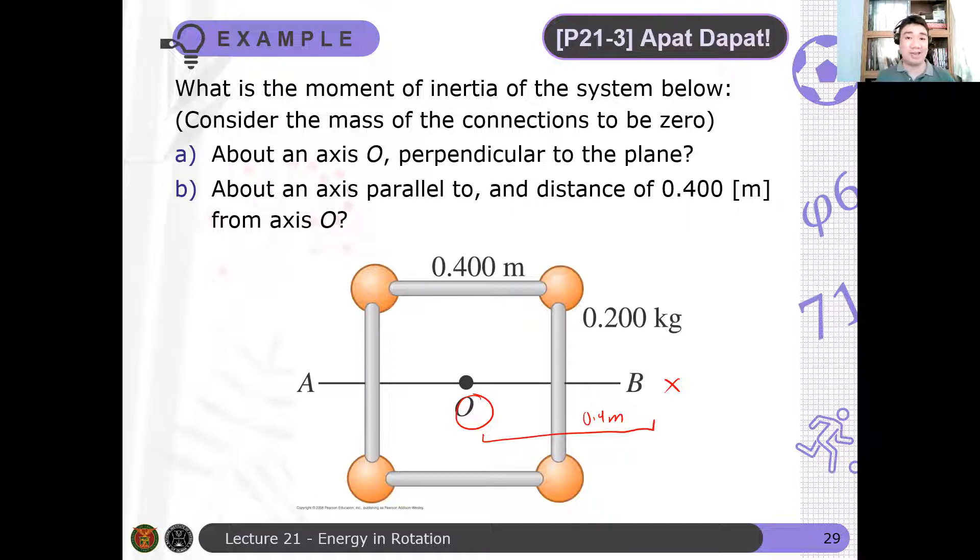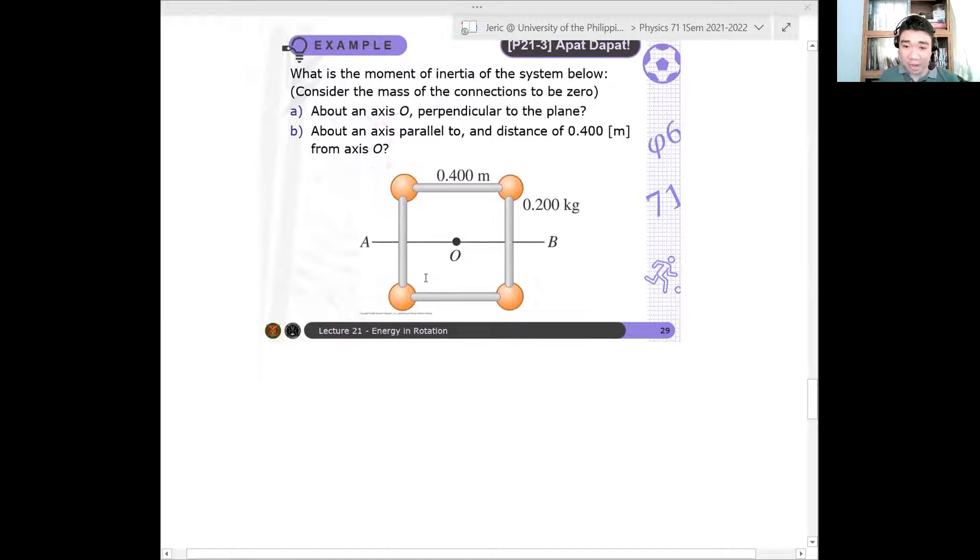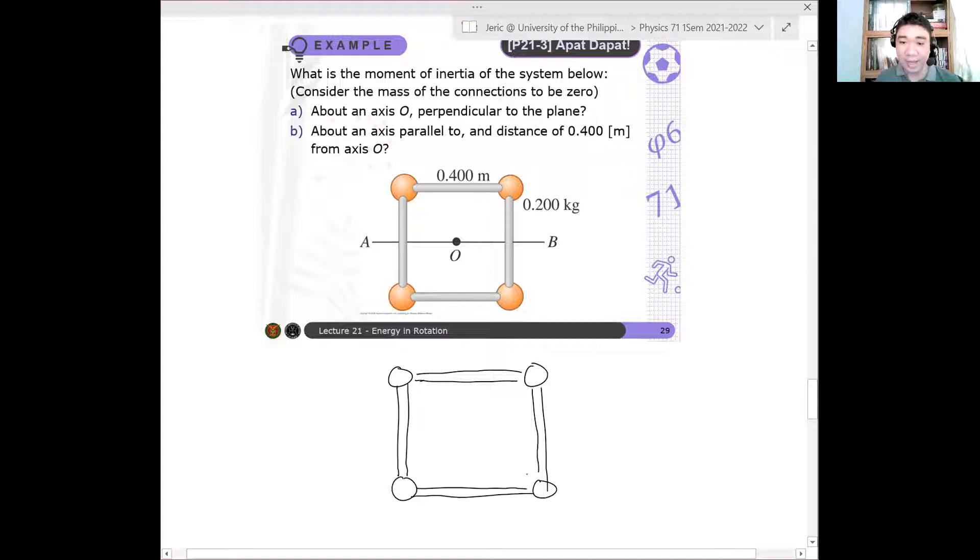Ang tinatanong, ano'y magiging moment of inertia niya? I'll just show you the solution to this problem. So let me redraw this problem. Again, you have four point masses that are connected by massless rods. Rigid rods. And for letter A, what's the axis of rotation? The axis of rotation is the center of this square configuration here. So let's say this is O.